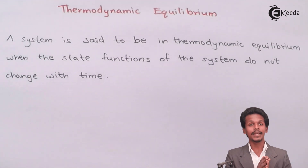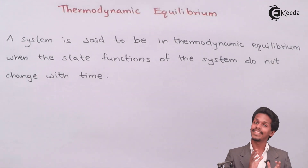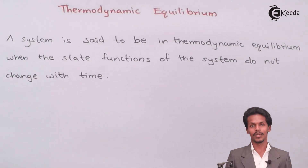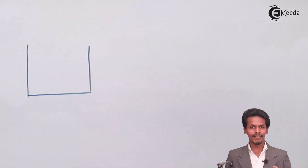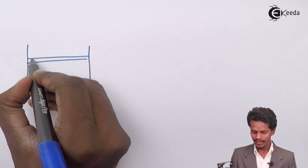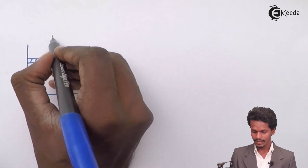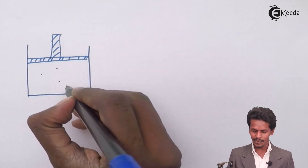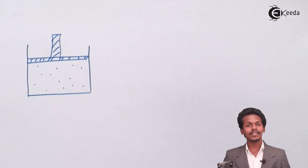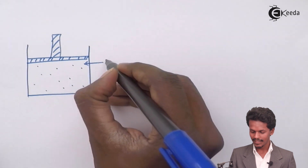So what this says is that state functions should not change with time, and only then will a system attain thermodynamic equilibrium. As an example, suppose I have taken a cylinder in which a gas has been enclosed, covered with a frictionless piston, as you can see in this rough diagram. The gas particles are enclosed and the pressure is maintained at a particular value.